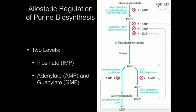High energy level is when we do biosynthesis like this. But if we're in low energy — meaning we have lots of ADP — we don't need to be doing biosynthesis. So it makes sense that ADP would turn this enzyme off. That's the main molecule, ADP, that regulates PRPP synthetase.